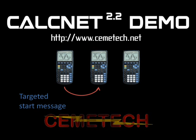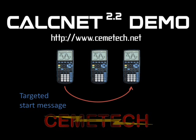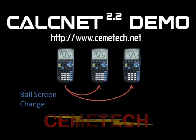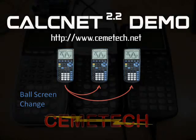The first calculator in the chain starts the game going, and when the ball reaches any of the shared screen edges, a packet is sent from that calculator to all of the other calculators in the network, notifying them of the new calculator that the ball will be on.